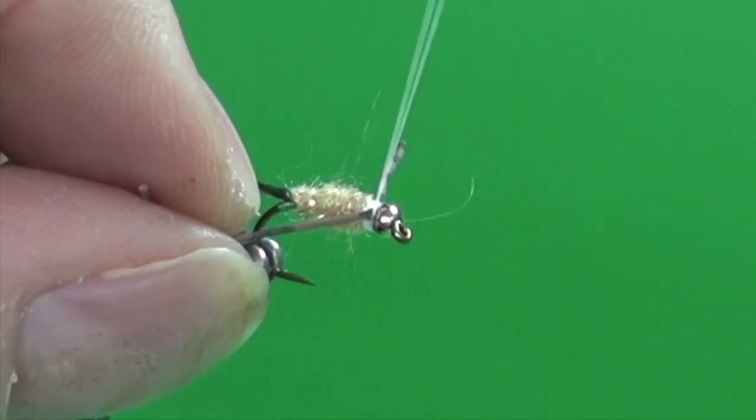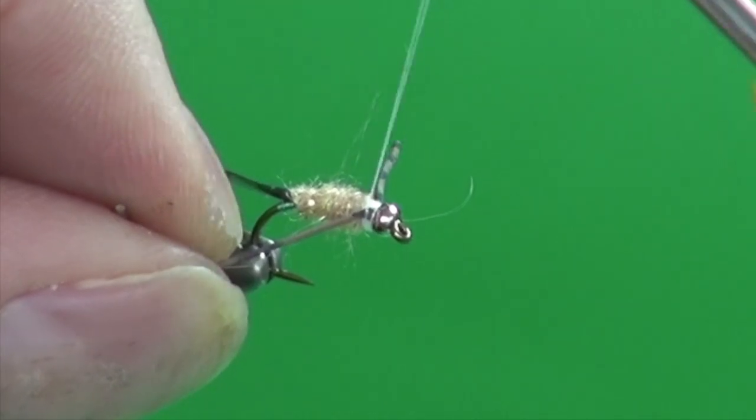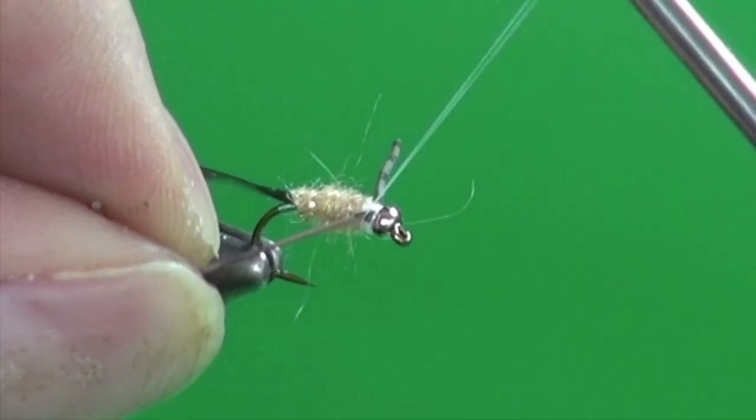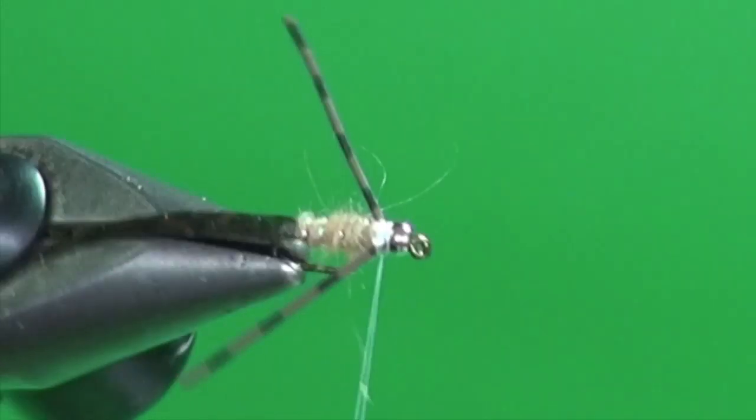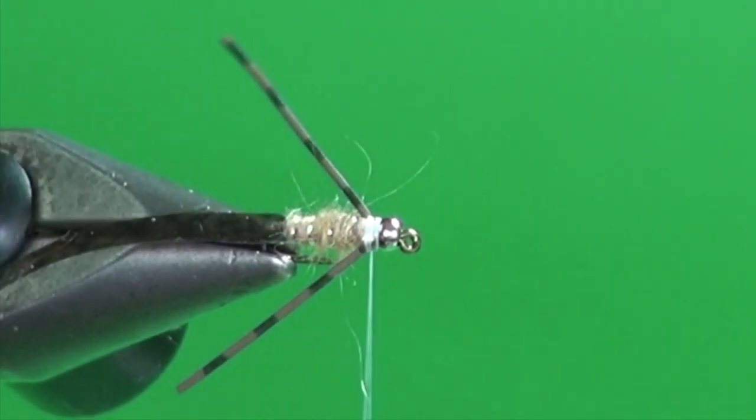Come back forwards and do the same for the near side leg. Just get that where I want it along the side. A couple of wraps and now I've got a nice little swept back pair of legs.